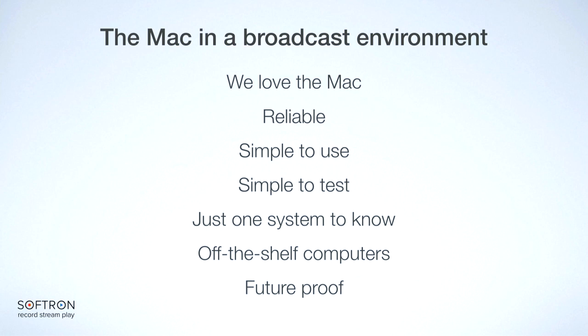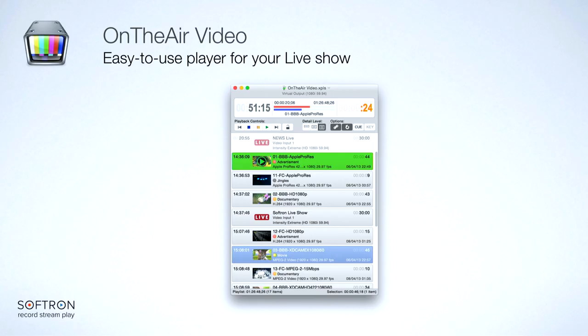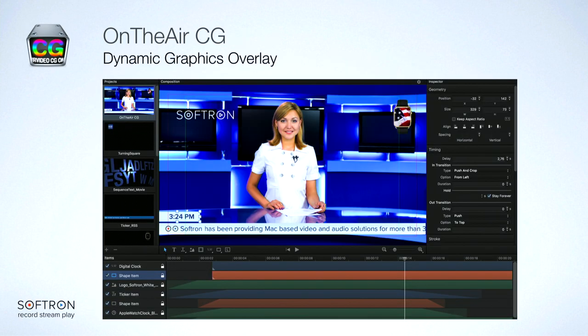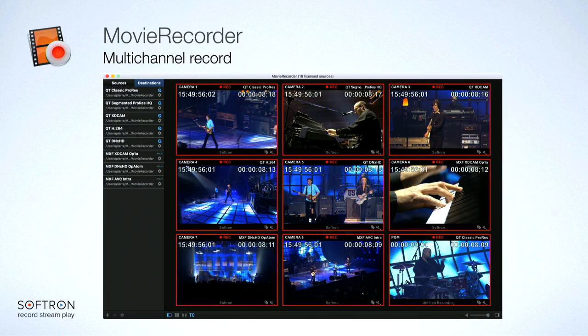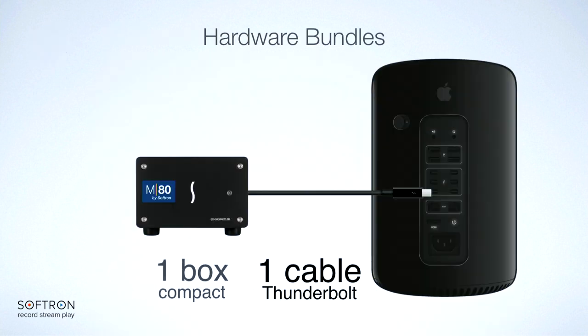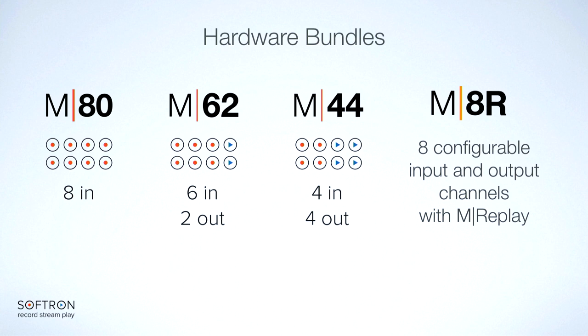These are the few reasons why we think the Mac in broadcast is the best platform. We have several software products: On-The-Air Video for playout and playlists where you drag and drop clips and start playing; On-The-Air Manager for scheduling with a calendar-style interface; On-The-Air CG for graphics overlay; Movie Recorder; Replay; and Multicam Logger for live environments. We use standard video cards from Blackmagic and AJA, but we also have small hardware boxes - one Thunderbolt cable and you can get eight inputs, six in, two outs and so on - making it easy to connect everything to the Mac and be ready in minutes.